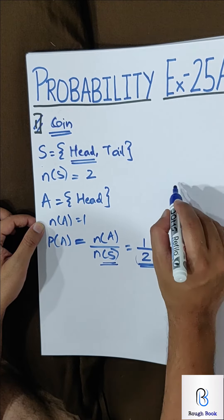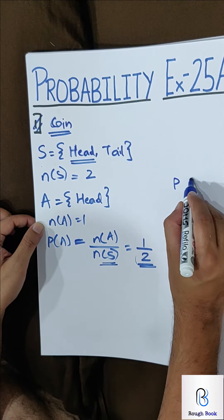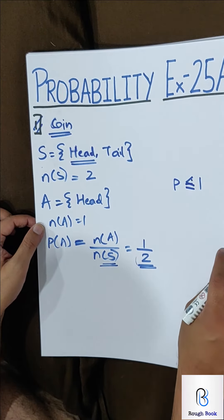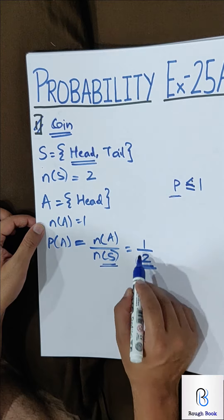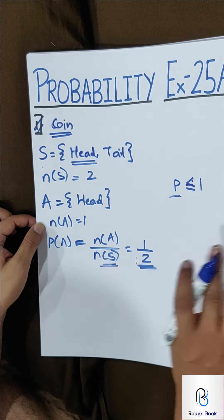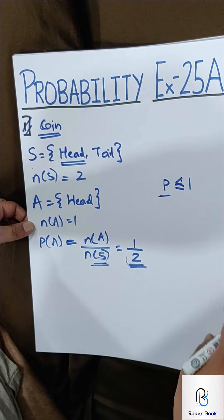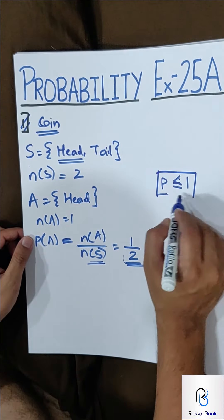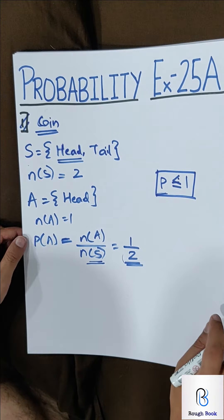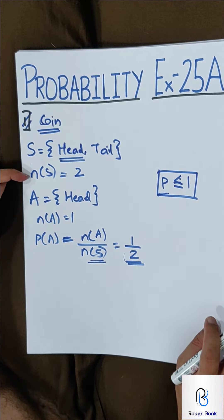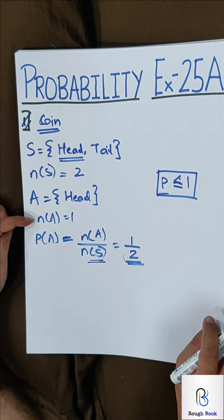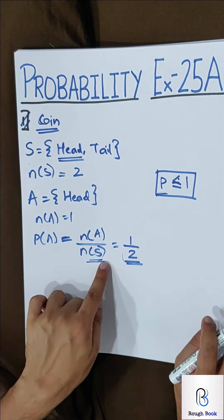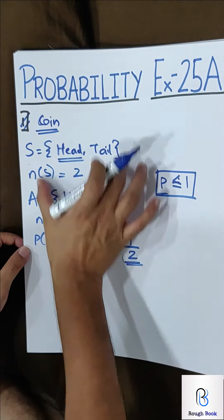Your probability will always be equal to or less than 1 — it can't be greater than 1, because the denominator is always bigger. You will never get more than 1. So remember: sample space, number of samples; event space, number of event; and probability = number of possible events upon number of total events. That's how you get your final answer.